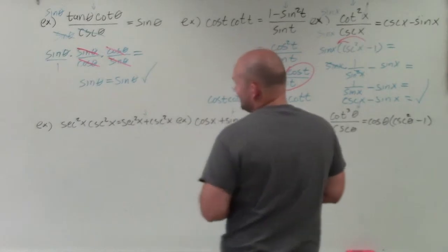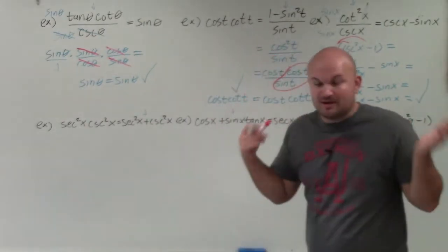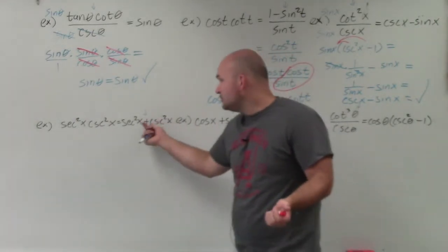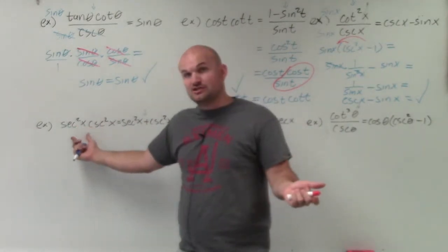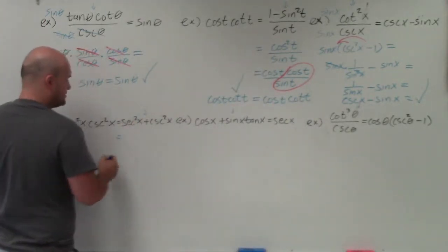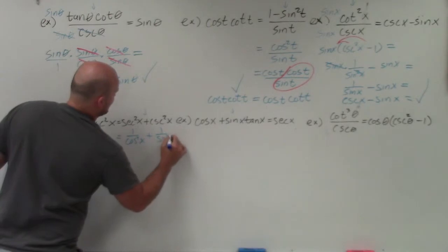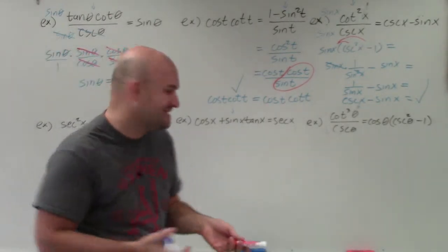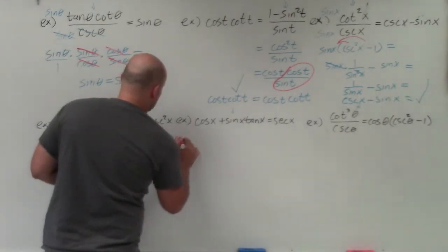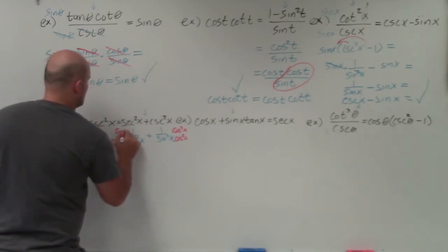Now let's look at my next set of three problems. Here I have addition, and as I mentioned, whenever you have addition or subtraction I like to start with that side, since the other side is just multiplication. I need to combine these two terms into one. To better understand that, I've got to rewrite in terms of sines and cosines: this is 1 over cosine squared of x plus 1 over sine squared of x. Nobody really likes to do this because now I have two rational expressions without common denominators. To get common denominators, I multiply the first term by cosine squared of x over cosine squared of x and the second by sine squared of x over sine squared of x.